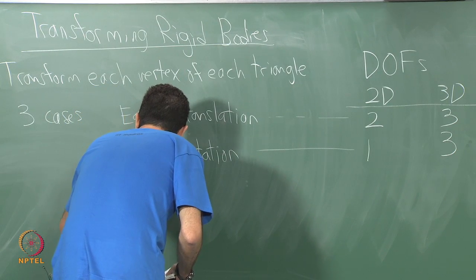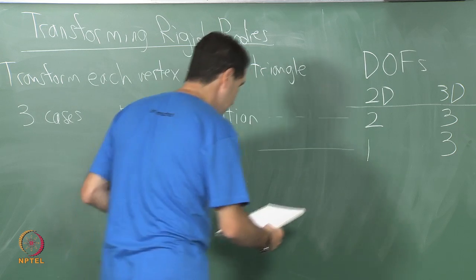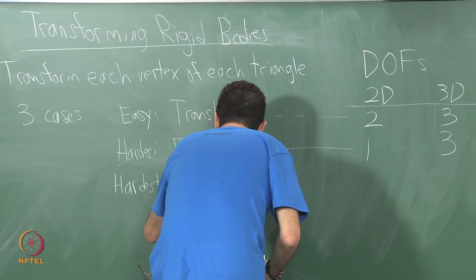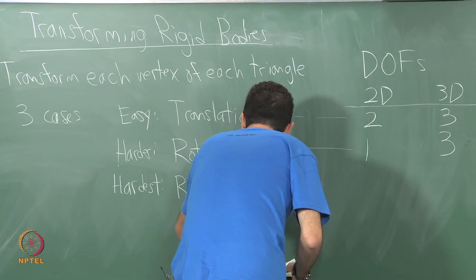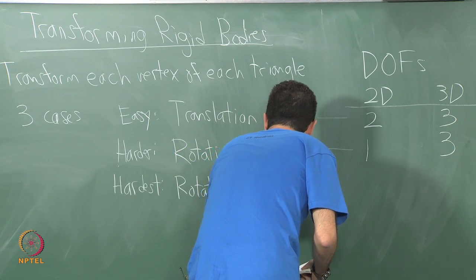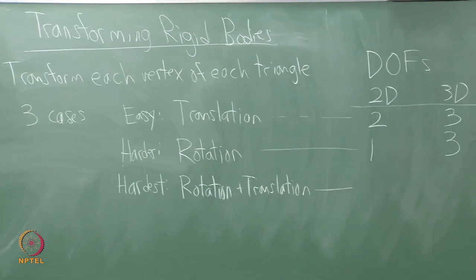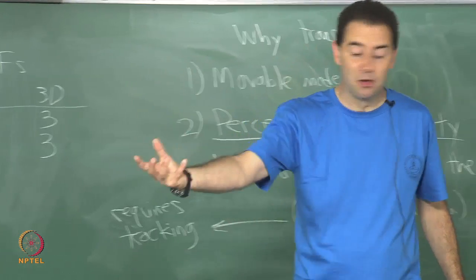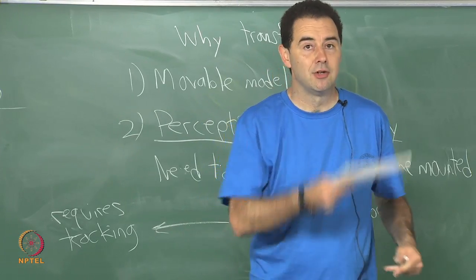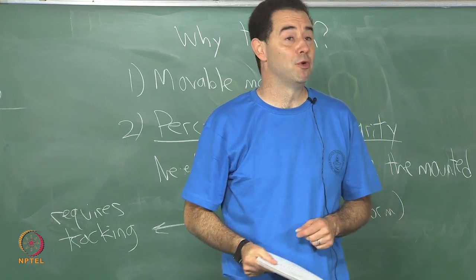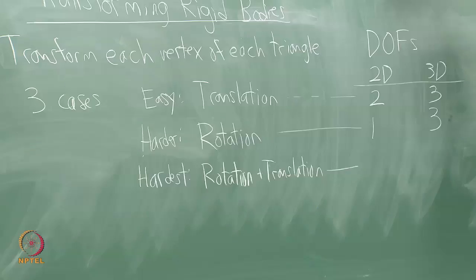And then the hardest case, which is not too much harder than the 3D rotation, is we put them together. So you get rotation followed by translation. Once I have that, then I can put a rigid body into any configuration that I like, right? I can translate it and I can rotate it.